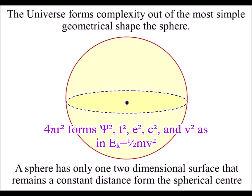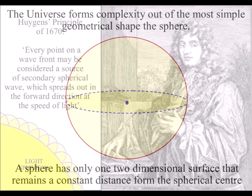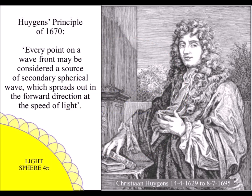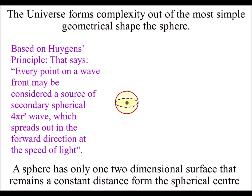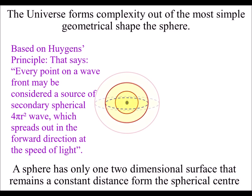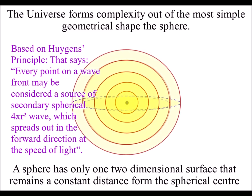The Universe forms complexity out of the most simple geometrical shape: the sphere. All we need is spherical geometry to arise naturally in the universe, and we have this in Huygens' Principle of 1670, which says every point on a wavefront has the potential for a new spherical wave. If we have light waves radiating out from a center point, it will form a sphere.